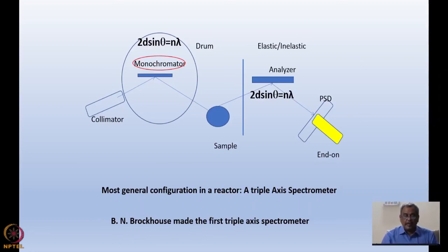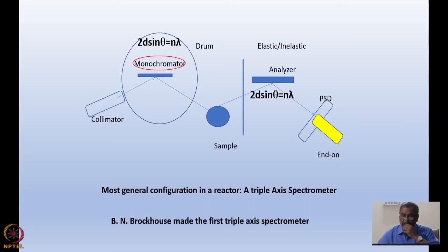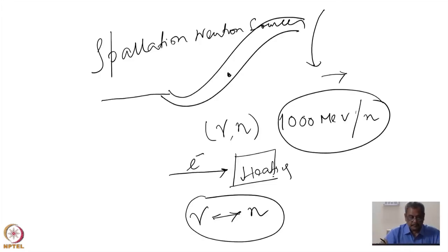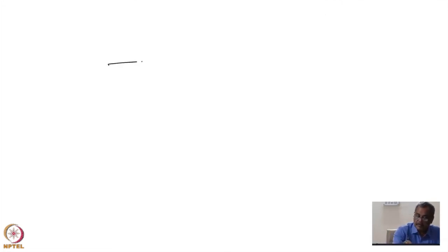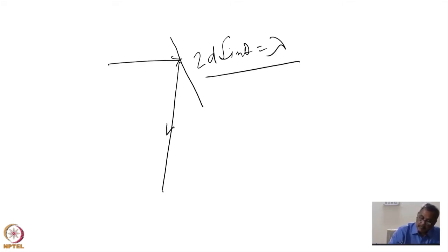I would now like to go back to the most general instrument design in the case of a reactor. It is a monochromatic beam-based technique. There is a collimator which fixes the beam direction, and then a monochromator which selects a wavelength through Bragg diffraction: 2D sin θ = λ. Crystals such as pyrolytic graphite, silicon, or germanium can make a monochromatic beam which falls on the sample.